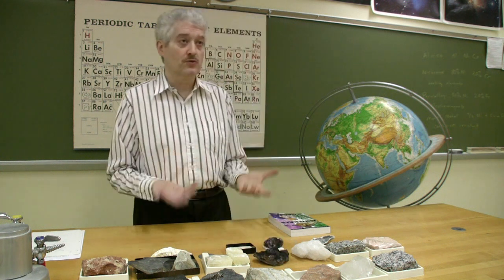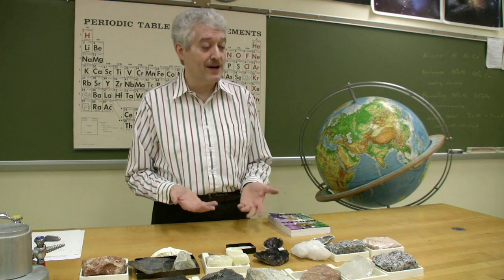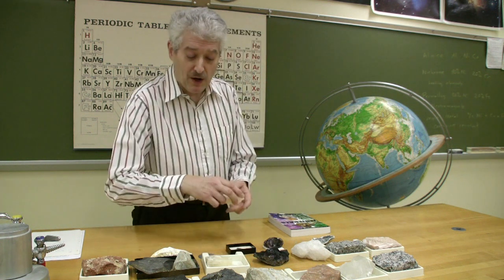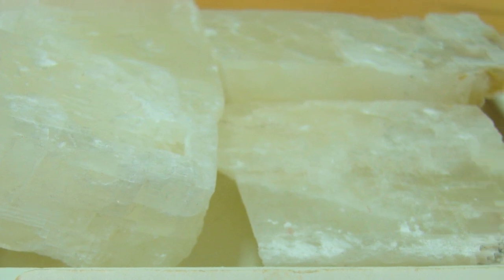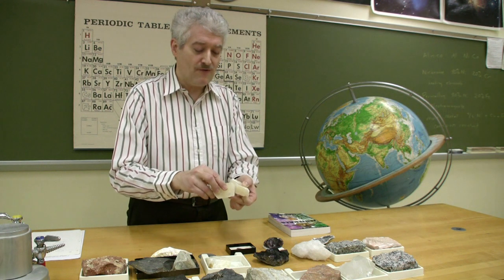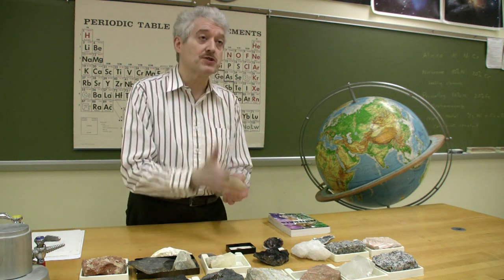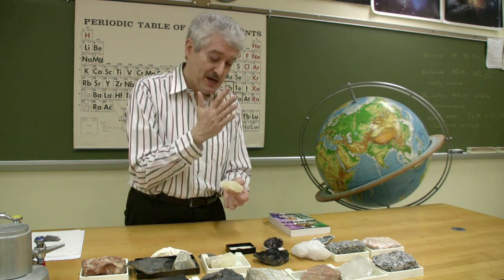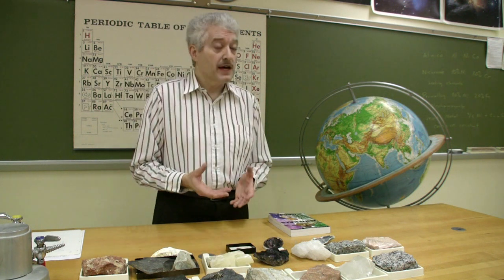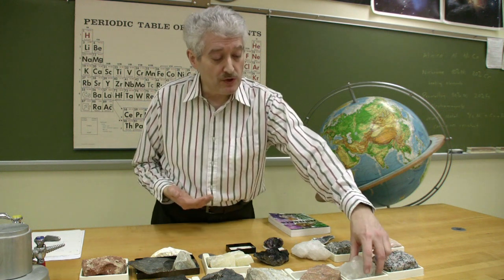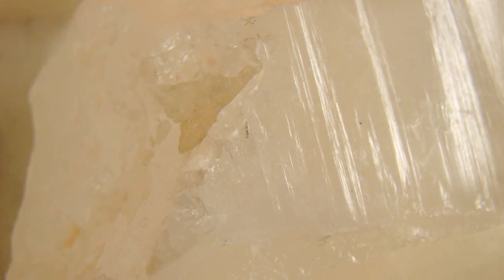Finally, we look at how a mineral breaks — or more properly, how it has broken, because we usually don't go around smashing our specimens. If we look at this piece of calcite here, which accidentally was broken a year or so ago, you'll notice that it broke along very flat surfaces, indicating a weakness in the crystal structure where the atoms basically just separated. Other materials will break irregularly — for example, in quartz, you can see where this crystal broke off. We say it has fracture rather than cleavage.